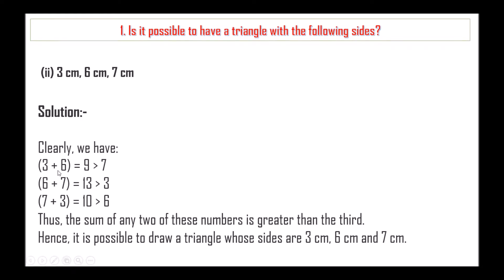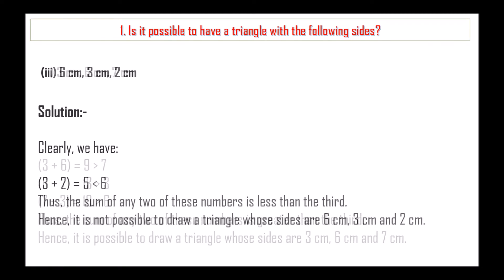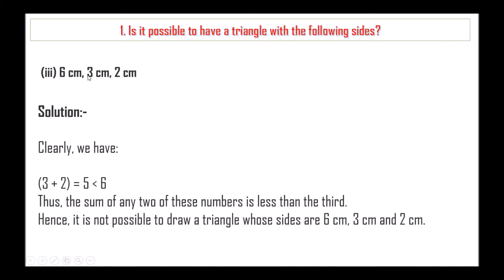Next: 3 cm, 6 cm and 7 cm. We have 3 plus 6 is 9, which is greater than 7. 6 plus 7 is 13, which is greater than 3. 7 plus 3 is 10, which is greater than 6. The sum of any two sides is greater than the third. Hence it is possible to draw a triangle whose sides are 3 cm, 6 cm and 7 cm.